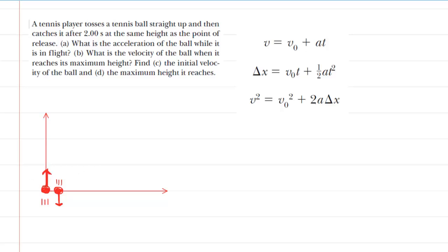We've drawn a picture that shows a tennis player initially throwing a tennis ball straight up into the air with some initial velocity that we do not know currently. The ball goes up, it stops, turns back around and returns to the same level from which it was thrown.